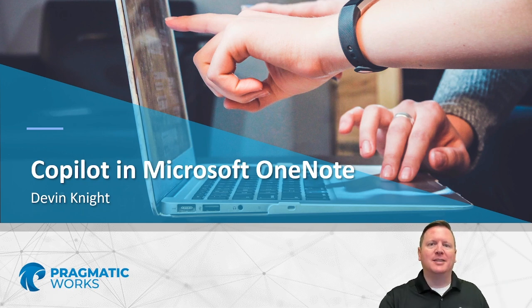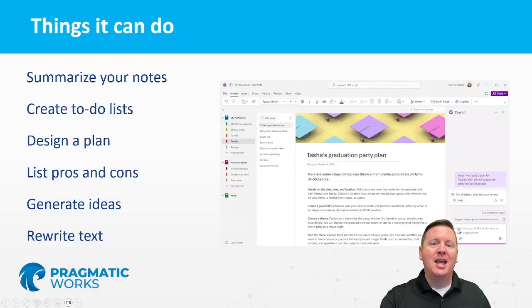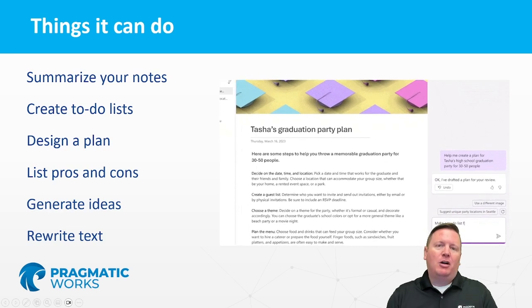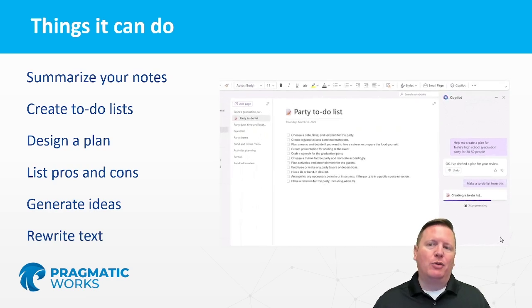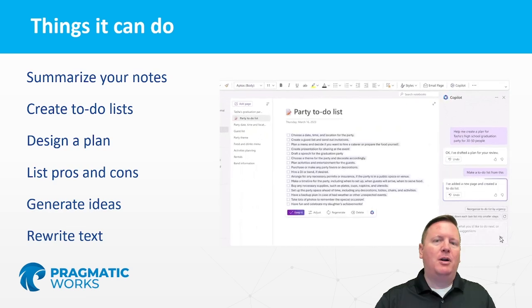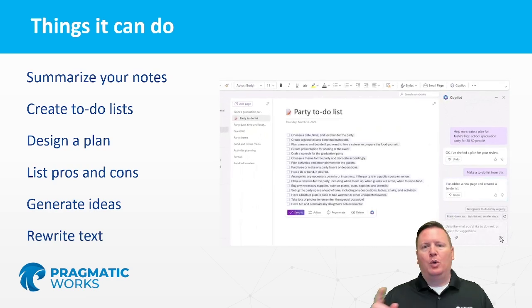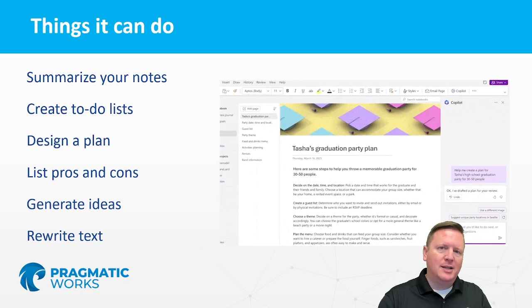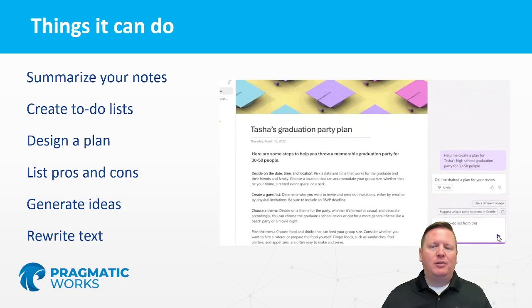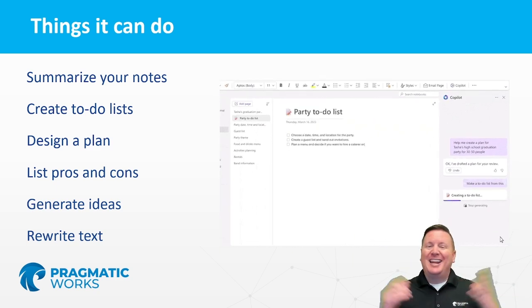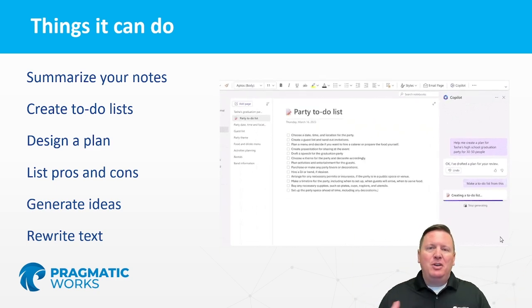How do you make sure your Copilot license actually shows up? And we're also going to look at some of the different things that you can do with Copilot inside of OneNote — things like summarizing notes, creating to-do lists, creating pros and cons lists, and creating and drafting a plan.